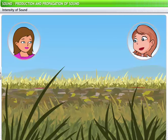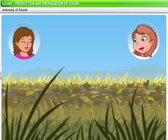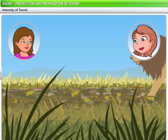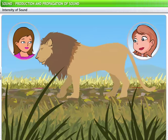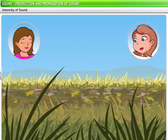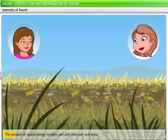What is the difference between the sound emitted by a lion's roar? A lion's roar is a high-intensity sound while rustling of leaves is a low-intensity sound. Intensity of sound is the amount of sound energy incident per unit time per unit area. The sound intensity is normally measured in watt per square meter.